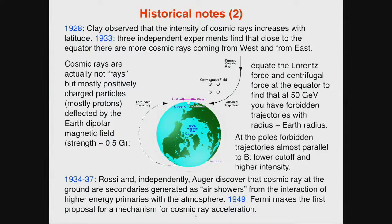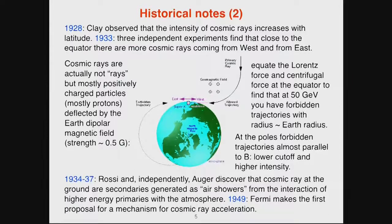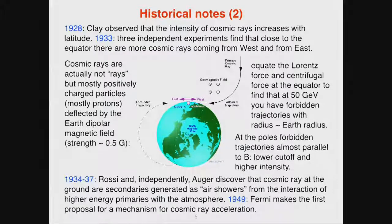These charged particles are absorbed in the atmosphere. Observations made independently by Rossi and Auger discovered that high-energy particles traverse the atmosphere making huge air showers — a large bunch of particles from one initial interaction point that can be used to reconstruct the energy of the shower. The last major historical milestone was Enrico Fermi, who in 1949 developed the first proposal for how to accelerate cosmic radiation in the galaxy.